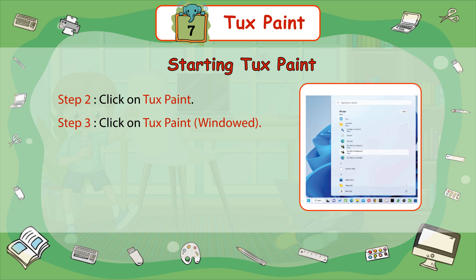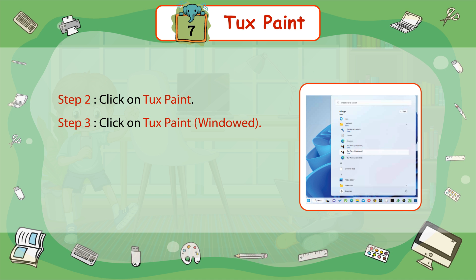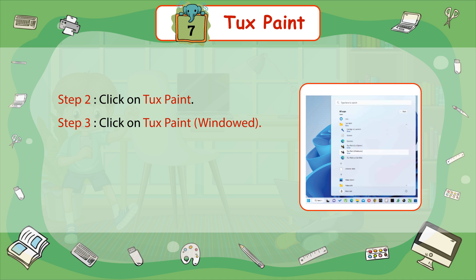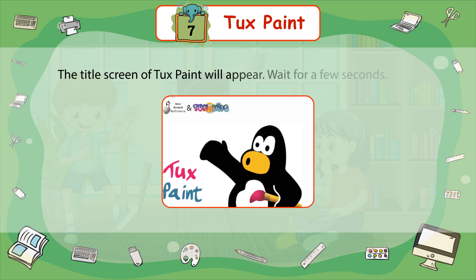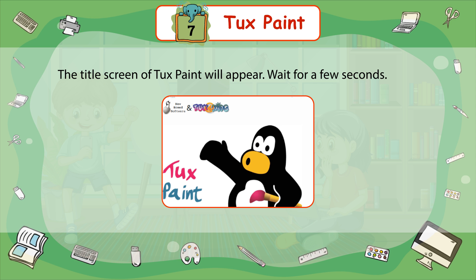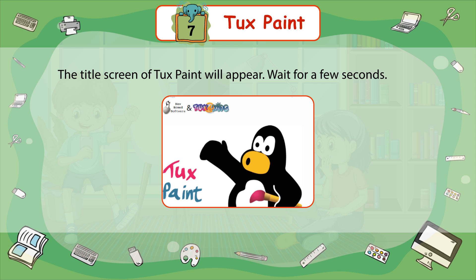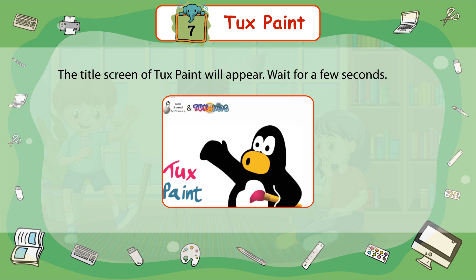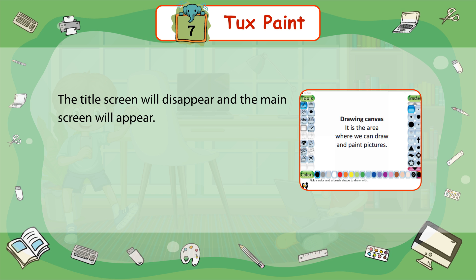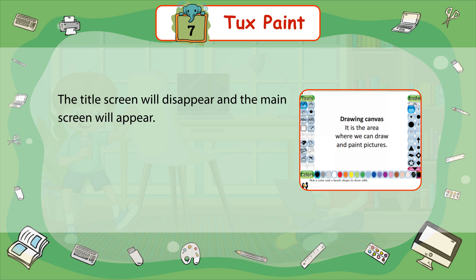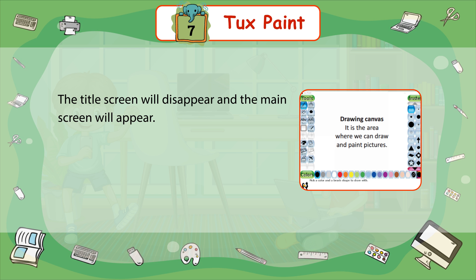Step 3: Click on Tuxpaint Windowed. The title screen of Tuxpaint will appear. Wait for a few seconds. The title screen will disappear and the main screen will appear.